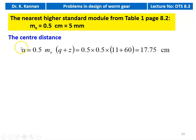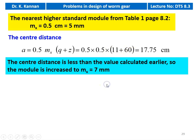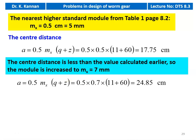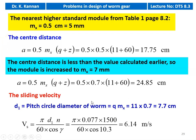We calculate the center distance: A = 0.5 × MX × (Q + Z) = 0.5 × 0.5 × (11 + 60) = 24.85 cm, which is higher than the value calculated earlier. Then we calculate the sliding velocity. The pitch circle diameter D1 = Q × MX = 11 × 0.5 = 5.5 cm. Wait, recalculating: D1 = 11 × 0.7 = 7.7 cm. Sliding velocity V = π × D1 × N / (60 × cos gamma) = π × 0.077 × 1500 / (60 × cos 10.3°) = 6.14 m/s.